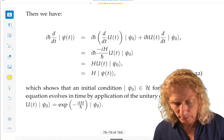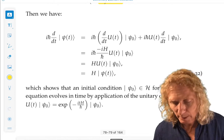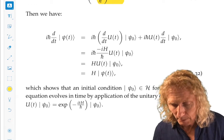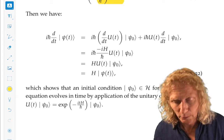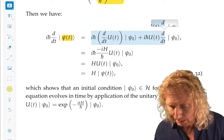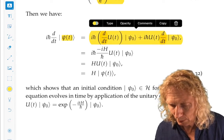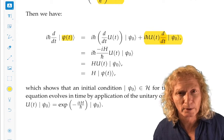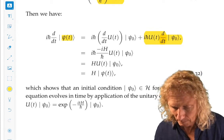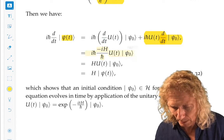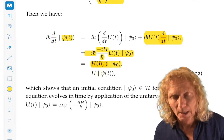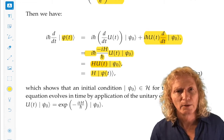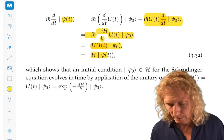Now back to the Schrödinger equation. iℏ d/dt of ψ(t), which is U(t)ψ₀. We differentiate this using the product rule. The term on the right is zero because ψ₀ is constant in time. We use the result that we derived above, and we get that ψ(t), defined in this way, satisfies the Schrödinger equation.